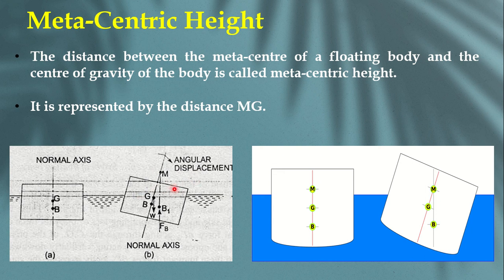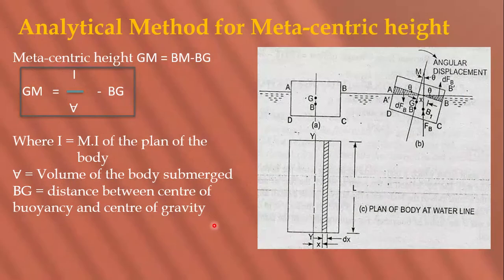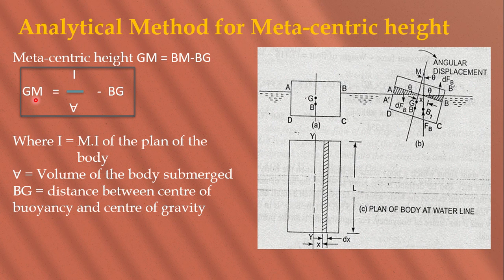Sometimes a body will be stable, sometimes it will drown — this depends on the position of M relative to G. Meta centric height is the distance between the meta center and the center of gravity, denoted as MG. There are two methods for determining meta centric height: the analytical method and the experimental method. Coming to the analytical method: